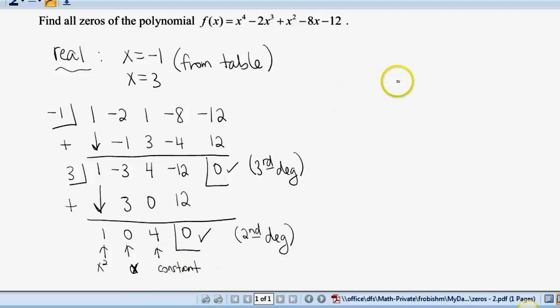So that means I now have to solve the polynomial x squared plus four equals zero. Well I can go ahead and subtract my four from both sides. So x squared equals negative four.